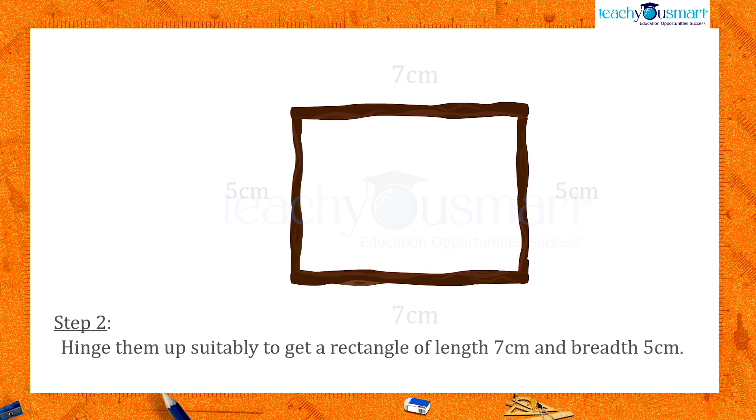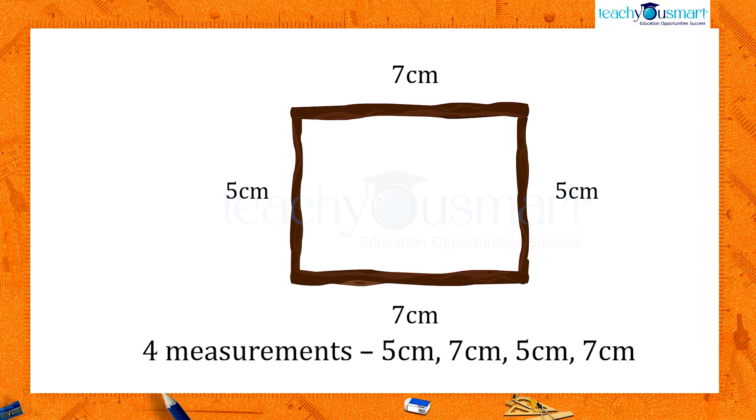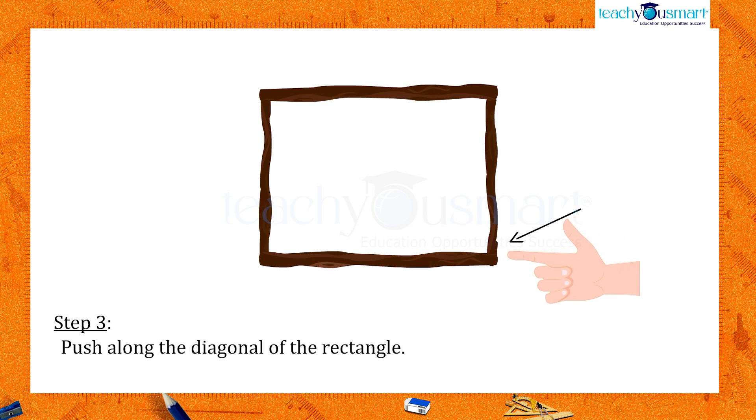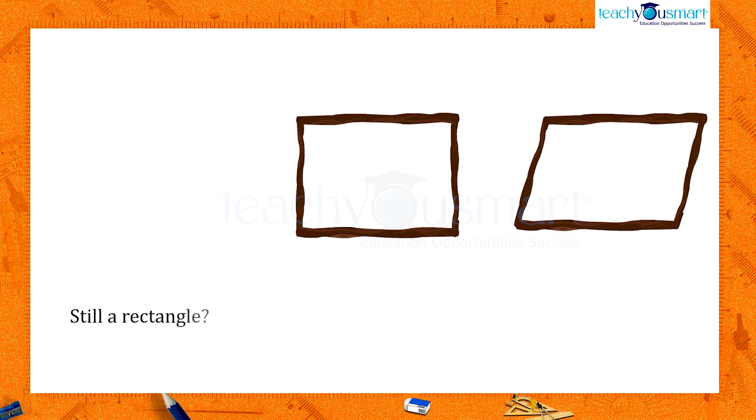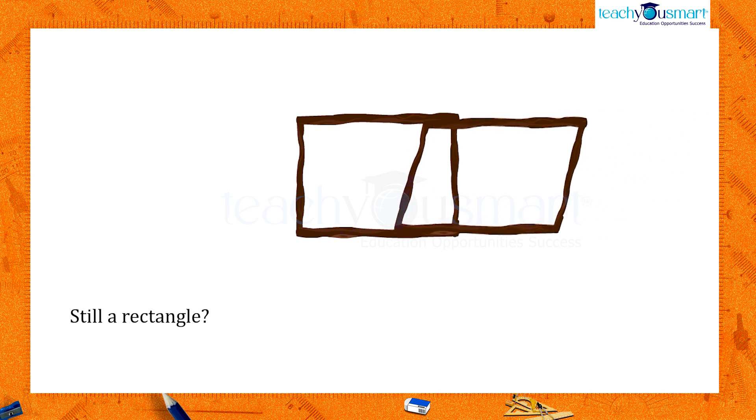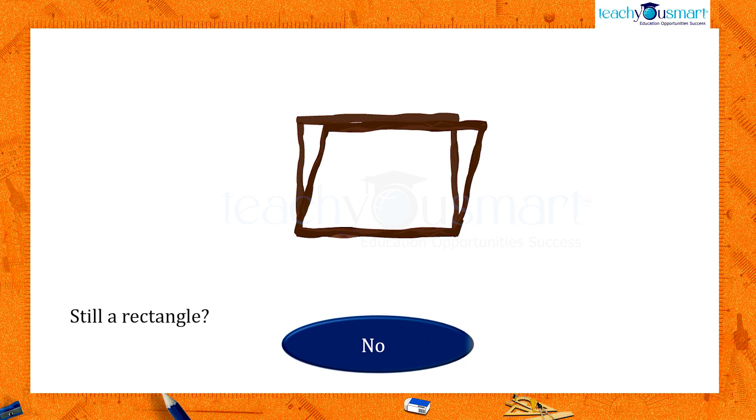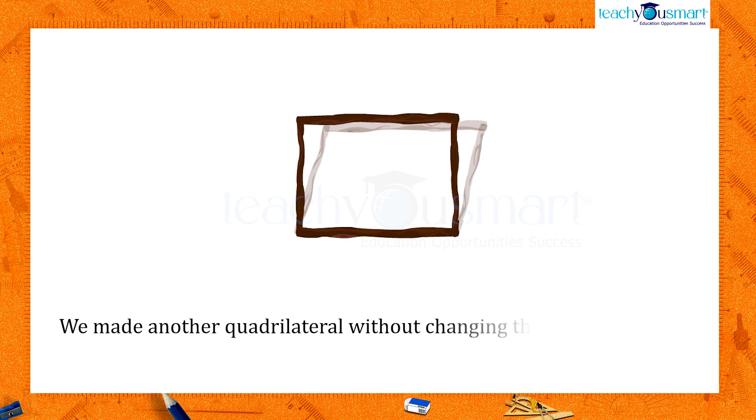We made this rectangle with four available measurements. Now just push along the diagonal of the rectangle. Is the new shape obtained still a rectangle? No, it's not. That is, we made another quadrilateral without changing the lengths of the sides.